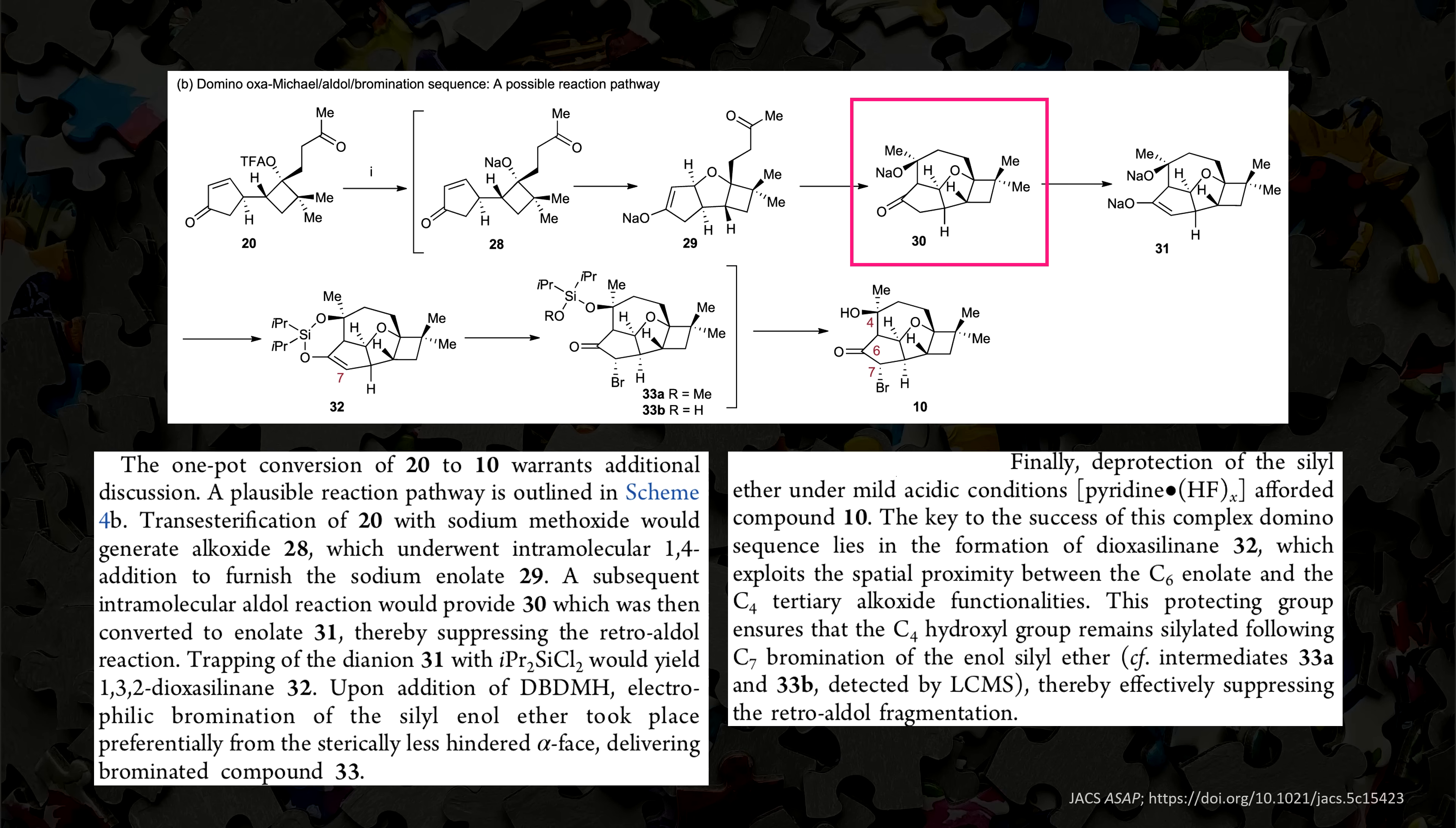They had to do some trickery by using excess base and trapping the dianion with a silyl chelate to avoid having the reaction go backwards again. Remember, chemical reactions go both ways. The last two sub-steps prepare the final ring closure of the total synthesis.